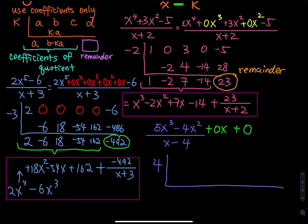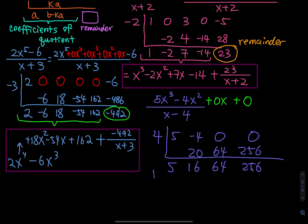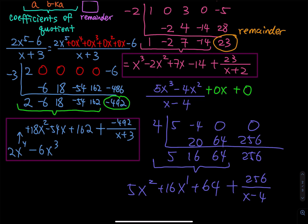So we have coefficients: 5, negative 4, 0, 0. Pull the 5 down. 5 times 4 is 20. 20 plus negative 4 is positive 16. 16 times 4 is 64. 64 plus 0 is 64. 64 times 4 is 256. 256 plus 0 is still 256. The last number, 256, is the remainder. The rest are coefficients of the quotient: 64 is the constant, 16 belongs to the first degree, and 5 belongs to the second power — so 5x squared plus 16x plus 64, plus 256 divided by x minus 4. That is the final answer.